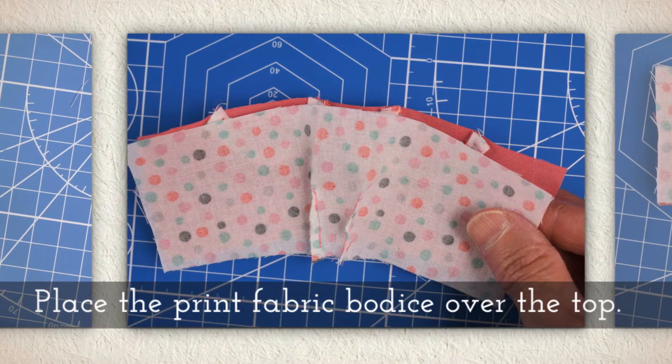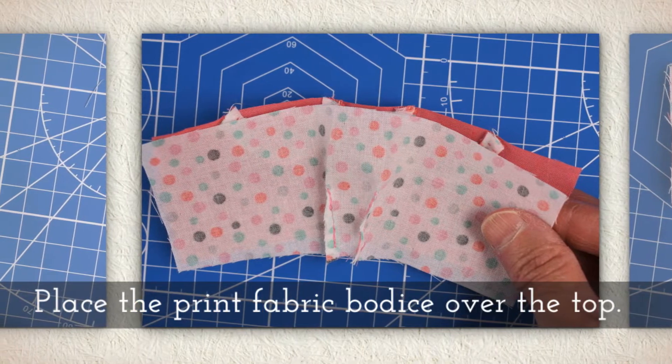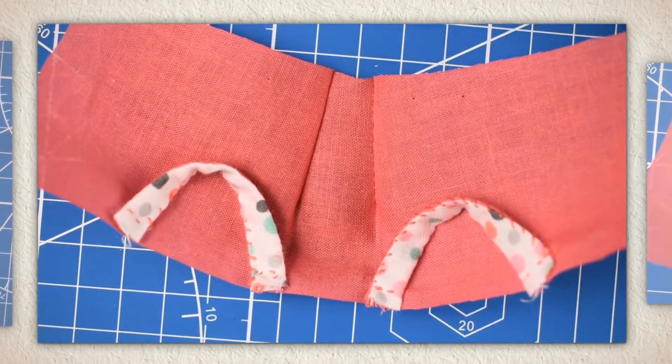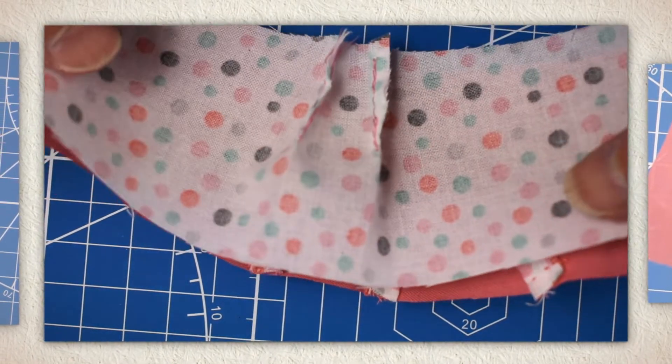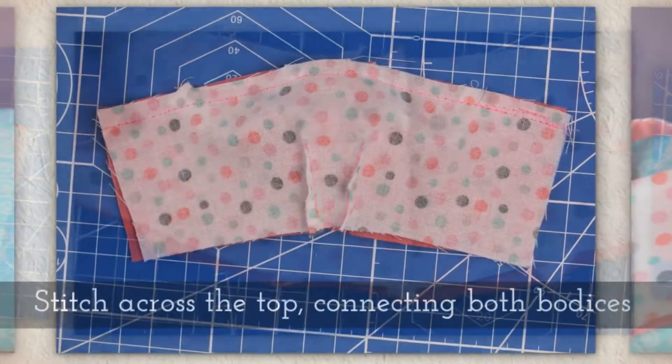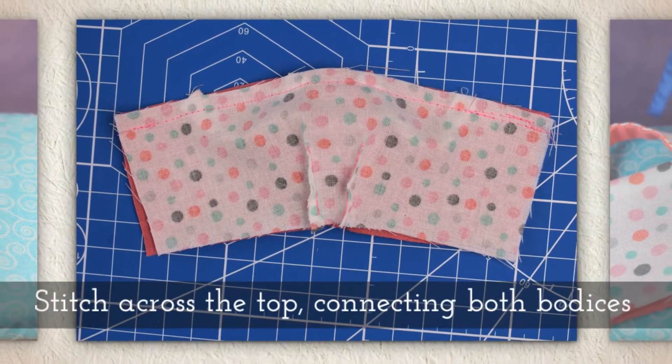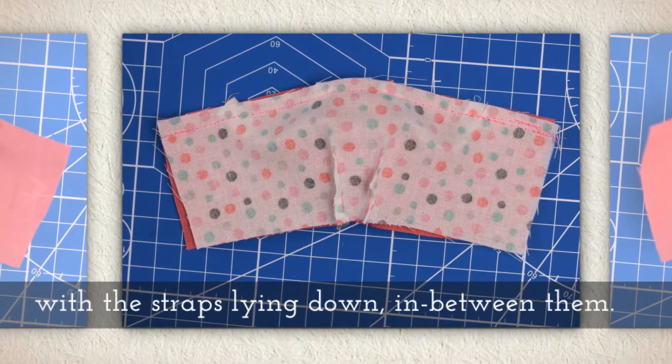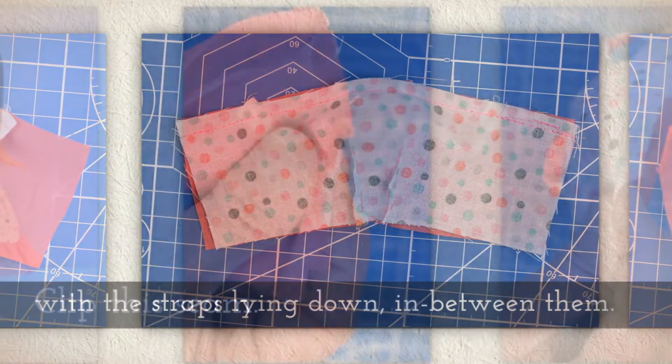Place the print fabric bodice over the top just like you see me doing here. I can see the print fabric facing me and then I lay this print with the right side down. Stitch across the top connecting both bodices with the straps lying down in between them.